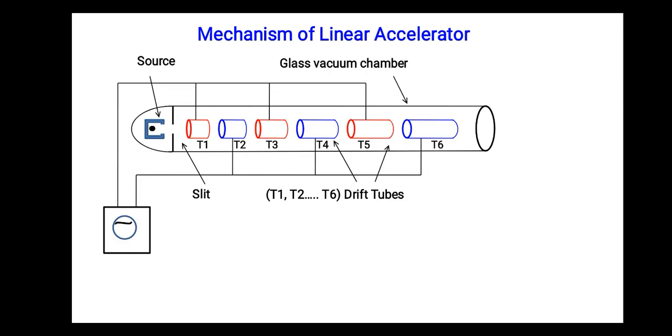Now an important thing you must note here is that all even numbered tubes, that means T2, T4, and T6, are connected to one terminal of RF or radio frequency oscillator, and all other tubes, T1, T3, T5, or all odd numbered tubes, are connected to the other terminal of the radio frequency oscillator.